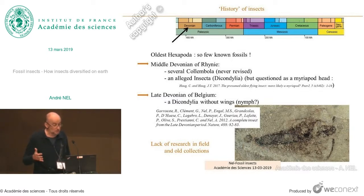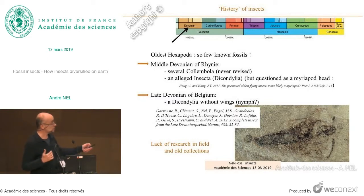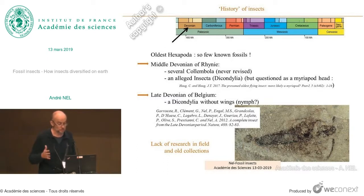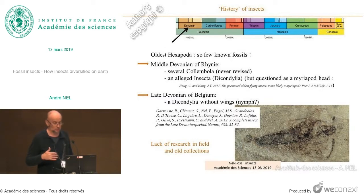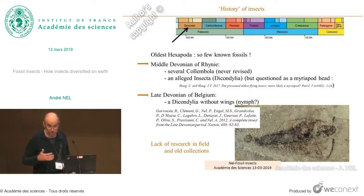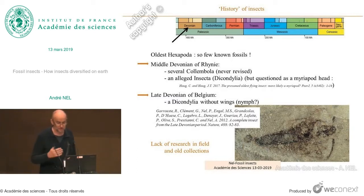There is a possible insect from the late Devonian of Belgium, which could be an apterygote Diplura without wings, but it was questioned and debated, as it is not very well preserved. As a result, we have very few things from the Devonian. It is a big problem.